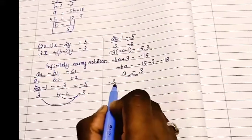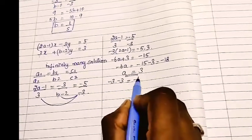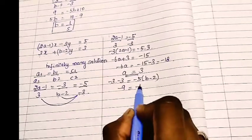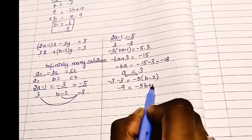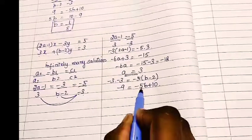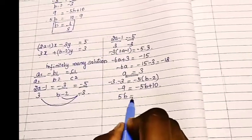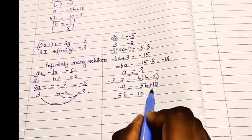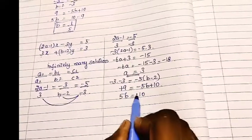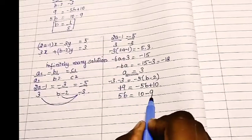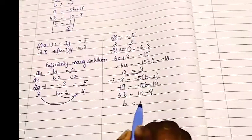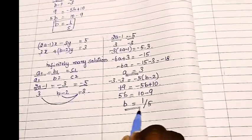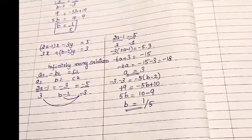Now equate the other parts: minus 3 into minus 3 equals minus 5 into (b-2). Then minus 9 equals minus 5b plus 10. You will find 5b equals 10 plus 9. Plus 9 on this side, then b equals 19 by 5. Wait, correction: b equals (10 minus 9) by 5, which is 1 by 5. Answer: a equals 3, b equals 1 by 5.